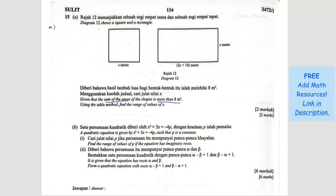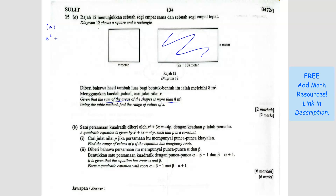So for question A, the area for the square would be x times x, so it's x squared. Plus this rectangle will be x times (2x + 10). So you get 2x squared plus 10x, which should be more than 8. Simplify: 3x squared plus 10x.